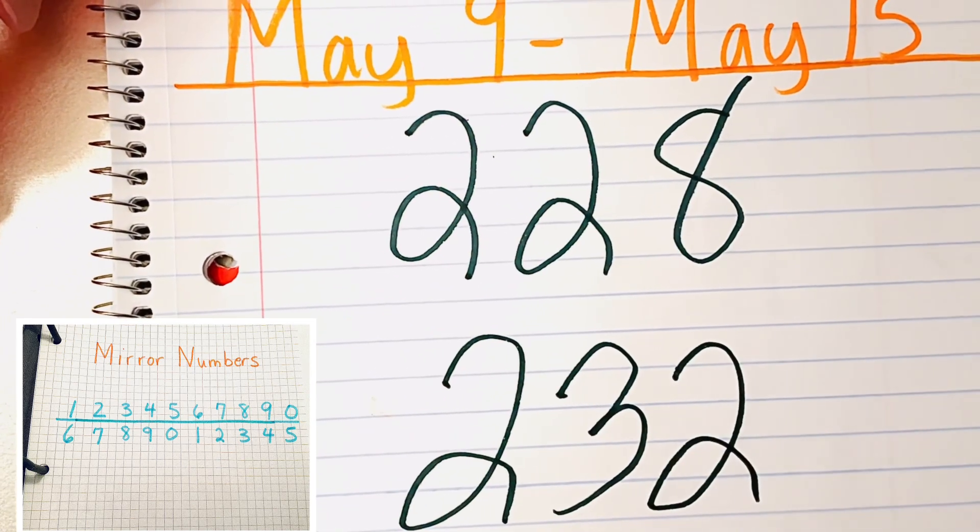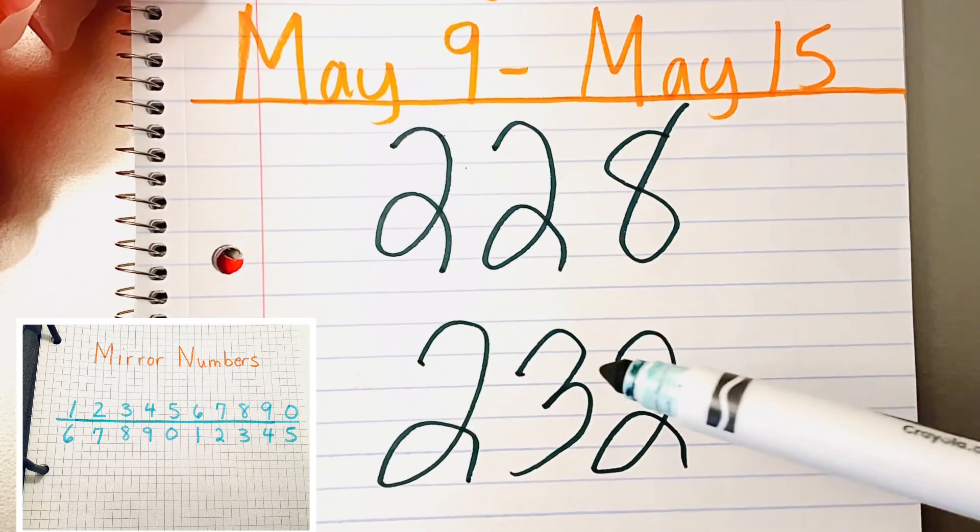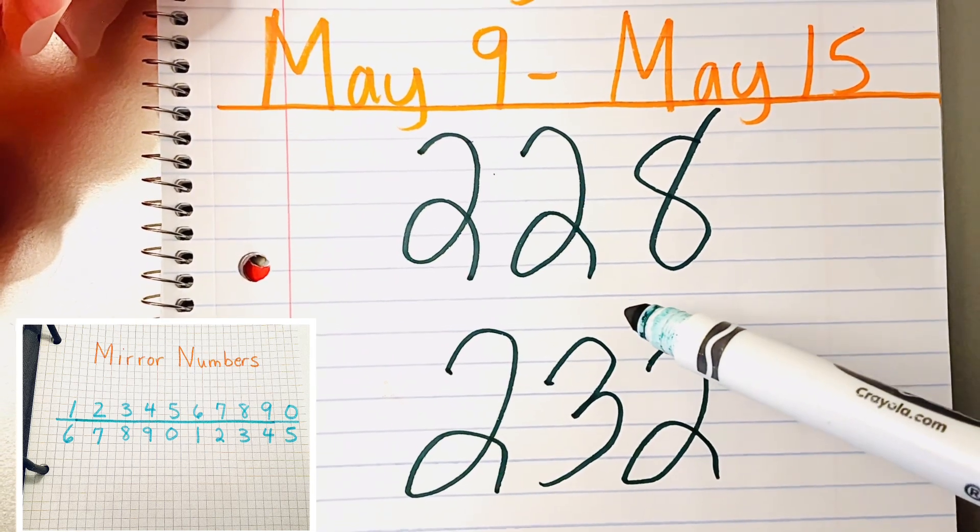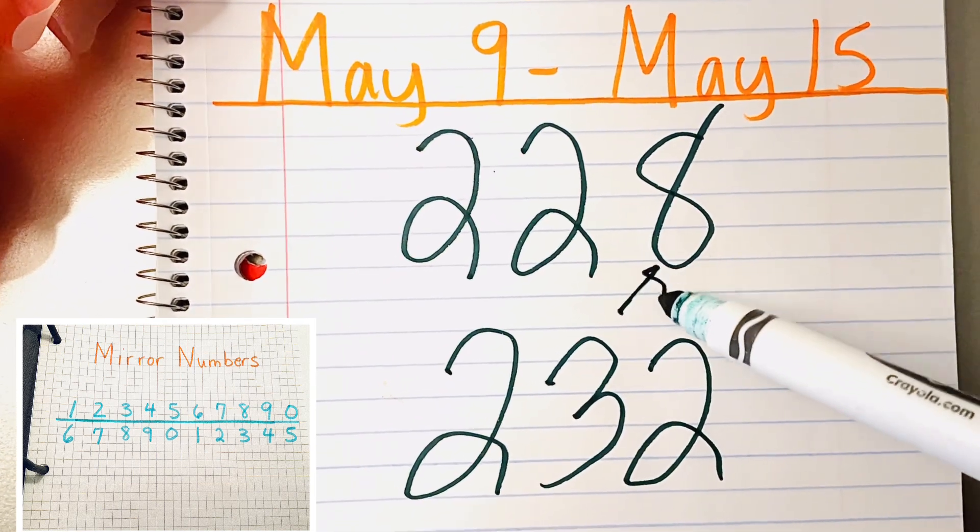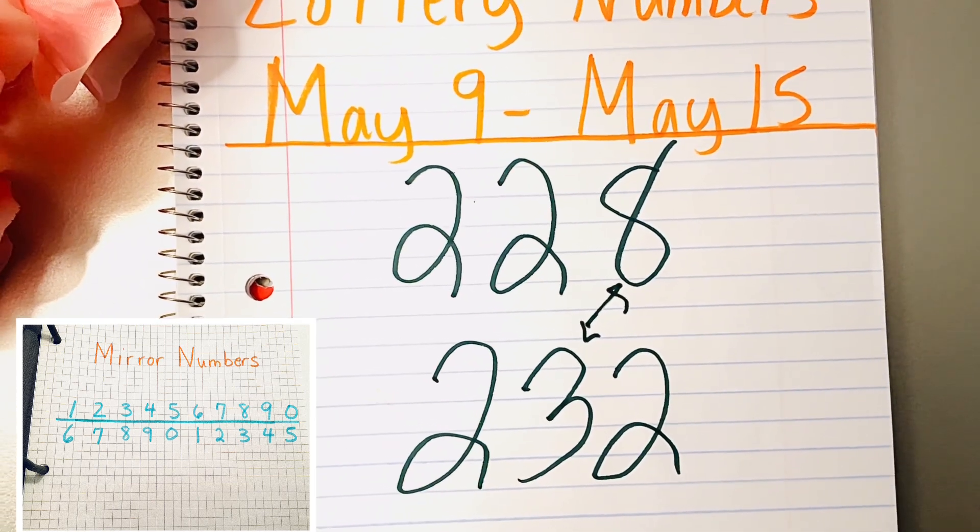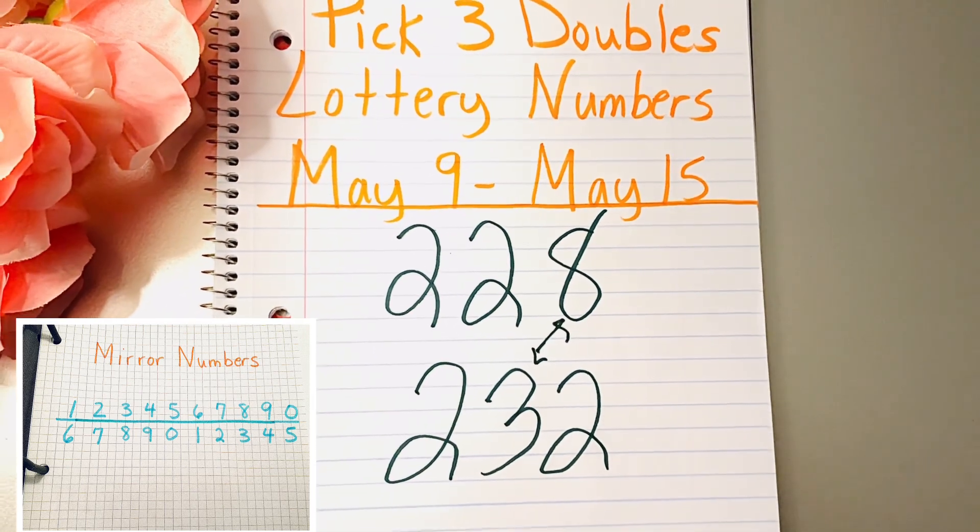And again, if we look at the 8 at the top of the 228, if you play 228, you should play 232, because that 3 is an 8 and 8 is a 3. Again, this is another mirror number of each other. So if you select one of these numbers, I would play both of these together.